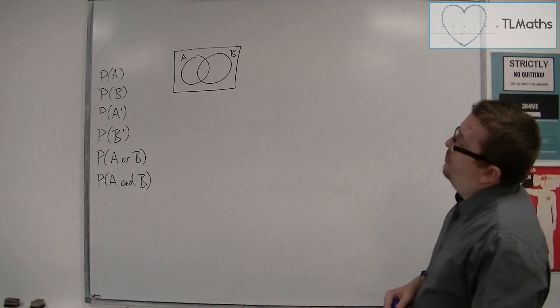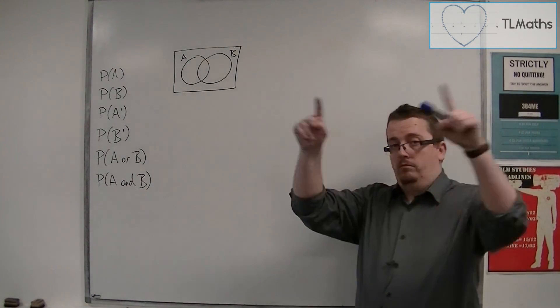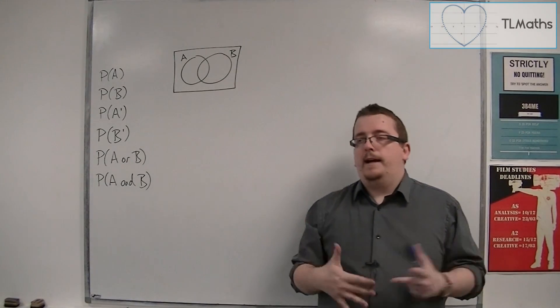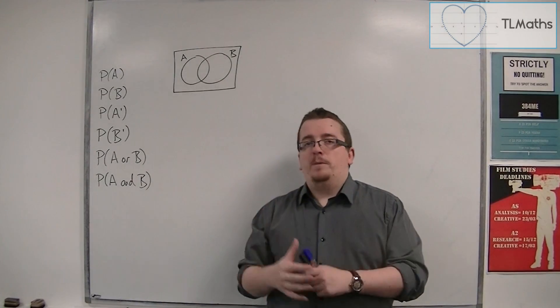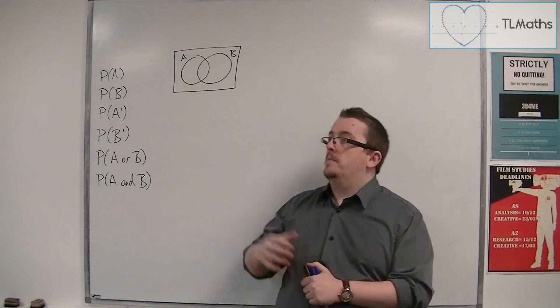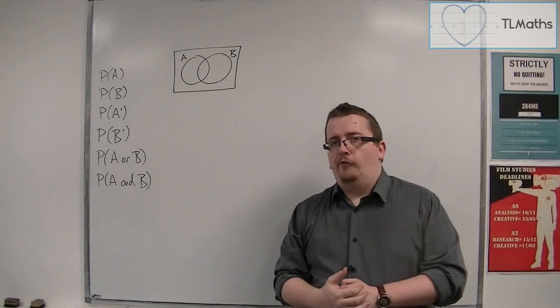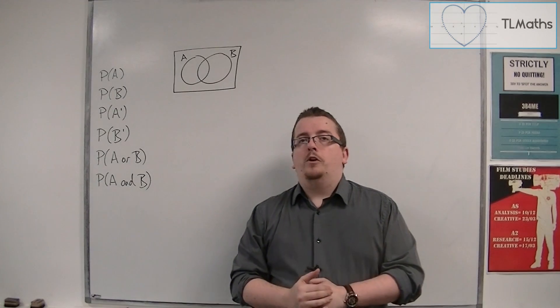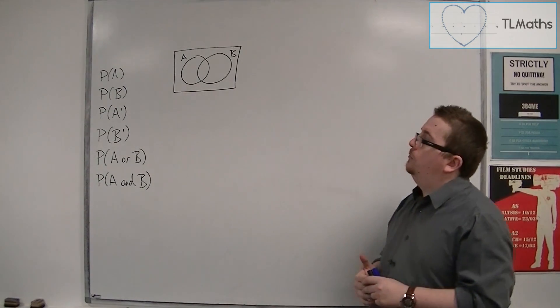We also draw a box around the diagram, really to represent so we've got somewhere to put the number that can be outside of the two circles. So neither A nor B, for example.